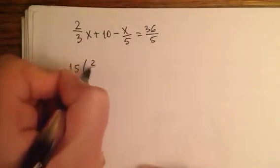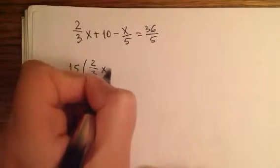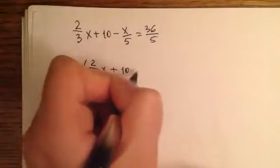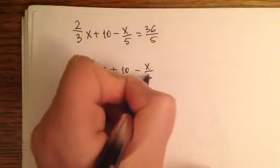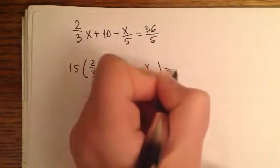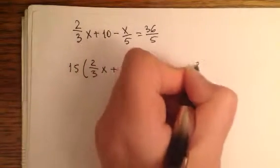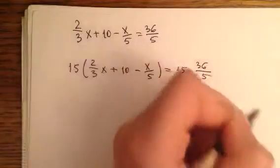Fifteen times two over three x plus ten minus x over five equals fifteen times thirty-six over five.